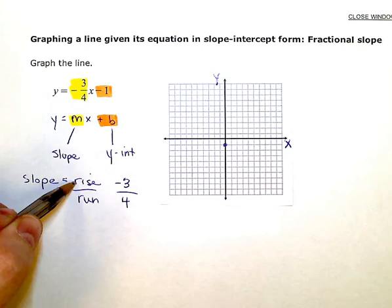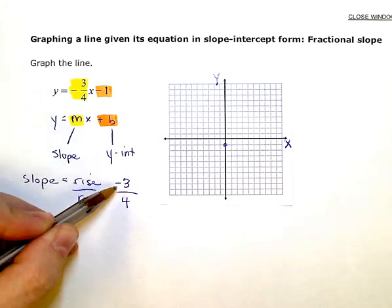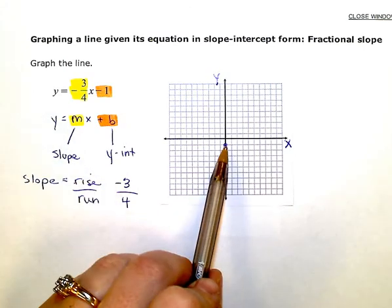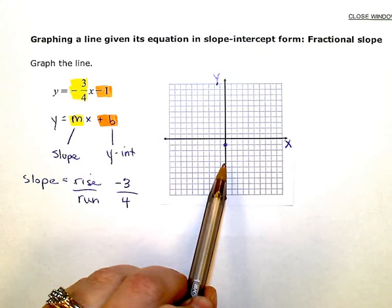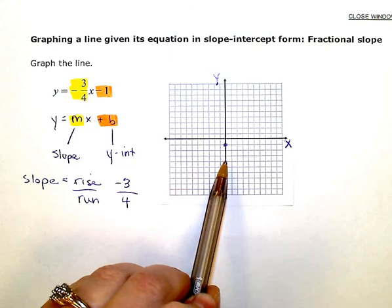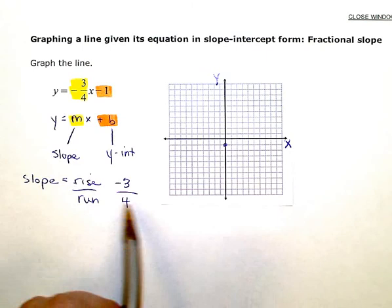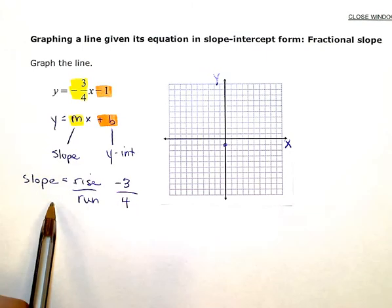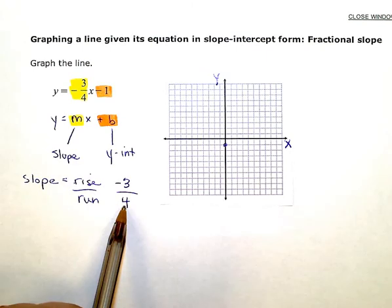So my rise or my change in the up and down direction is negative 3. So that means from this point I'm going to go down 3 to there, and then my run or my change in the horizontal left to right direction is positive 4.